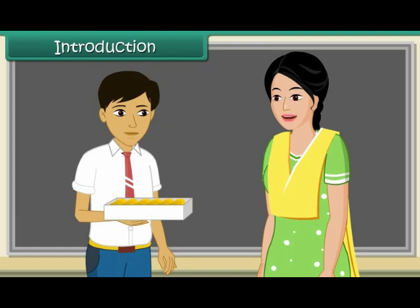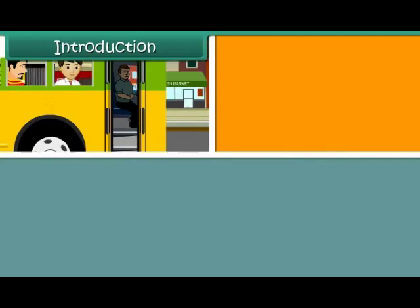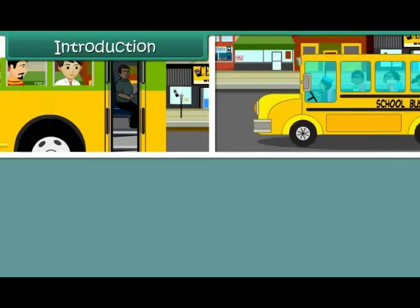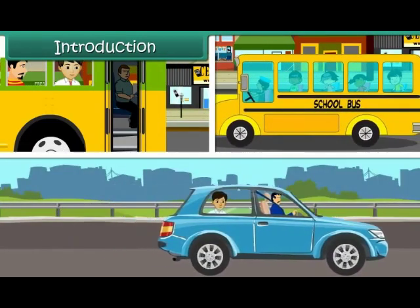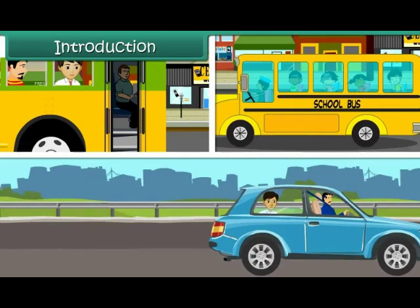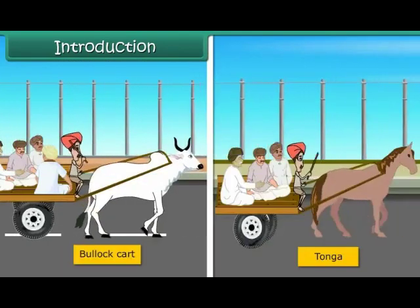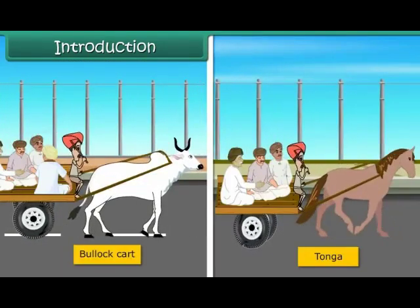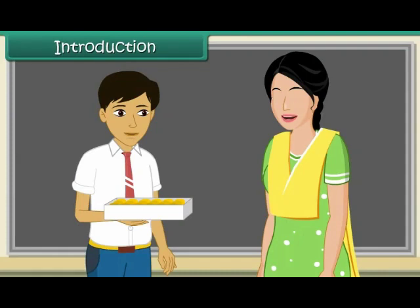We all travel every day to come to school. Some of us come by bus, some by the school bus and some by their own cars. But have you thought about what was used by people earlier to travel from one place to another? Bullock carts and tongas. Good. Let us look at some modes of transport used in the early days.